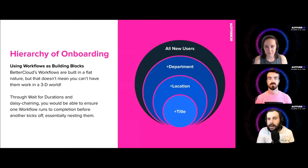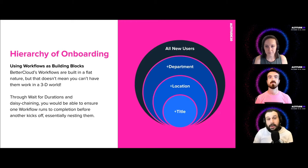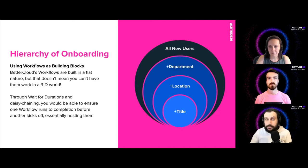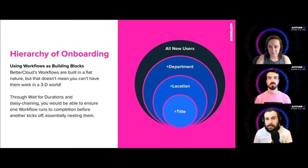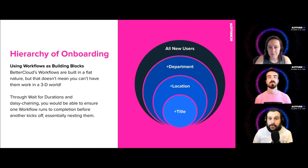Let's take a look at the hierarchy of onboarding through BetterCloud. Workflows in BetterCloud are somewhat flat — you're building one workflow to handle what you need. Maybe you need a workflow for all new users. Using our example stack of Google, Slack, and Zoom, everybody gets access to Slack and Zoom. So in your all-new-users workflow, the when trigger is when a new user is created. You wouldn't necessarily need an if condition since you want it for everyone. Then create them in Zoom, create them in Slack, get them access to groups and files, and send a welcome email.